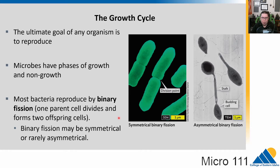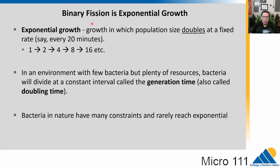In nature, the rate this happens is complicated — many factors influence it. In the lab, it's generally fast-paced. We give bacteria everything they want and need to reproduce quickly, so we can quantify growth. Binary fission is exponential growth: the population size doubles at a fixed rate. Under ideal lab conditions, the fastest bacteria like E. coli reproduce every 20 minutes.